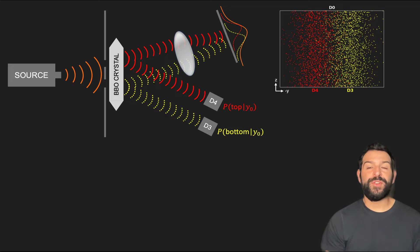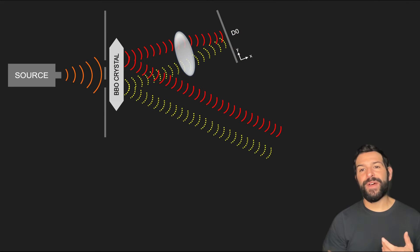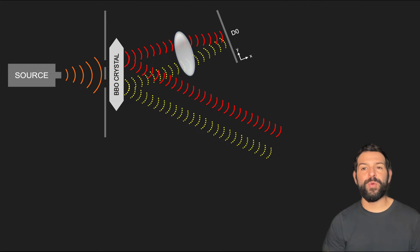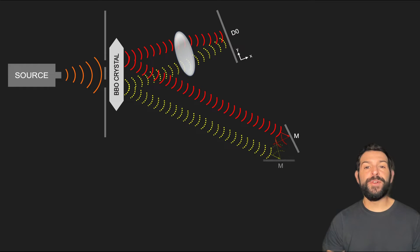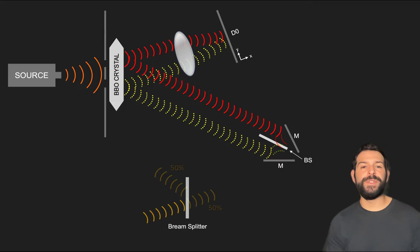Now so far we have described the least controversial part of this experiment. Let's now look at what happens when we add what is known as the quantum eraser. Now instead of having detectors D3 and D4 directly measure which slit the particle went through, we add a couple of reflecting mirrors to redirect the photon waves and an element known as a beam splitter, which either lets the photon go through or reflect back, each with 50% probability.